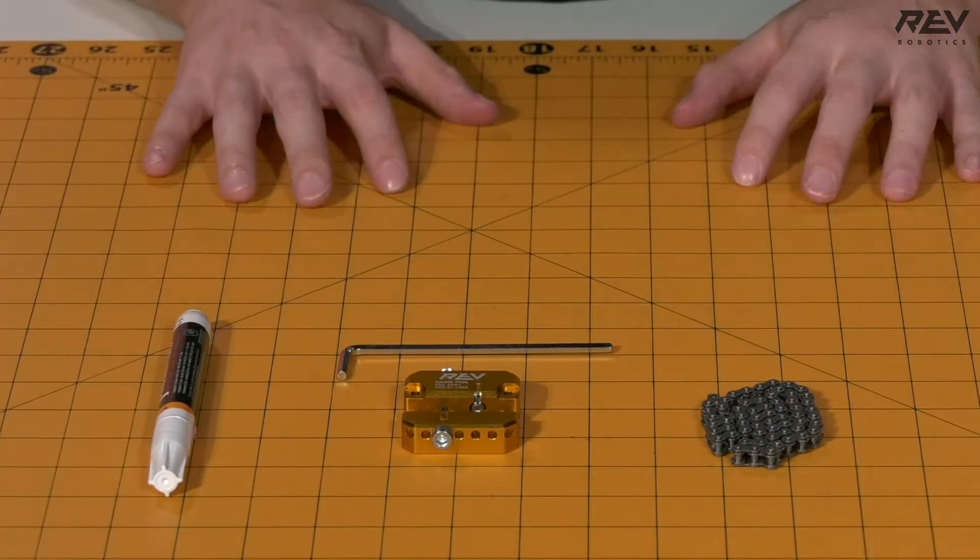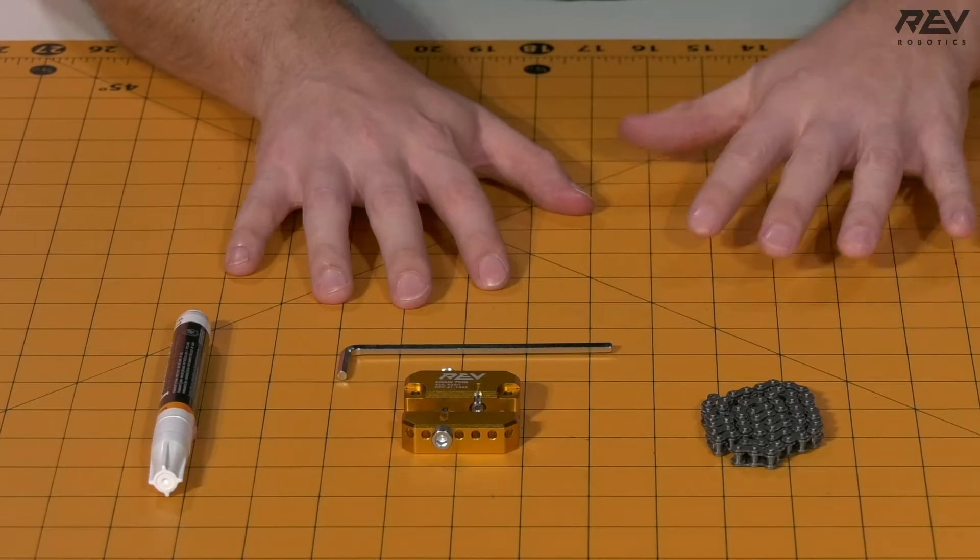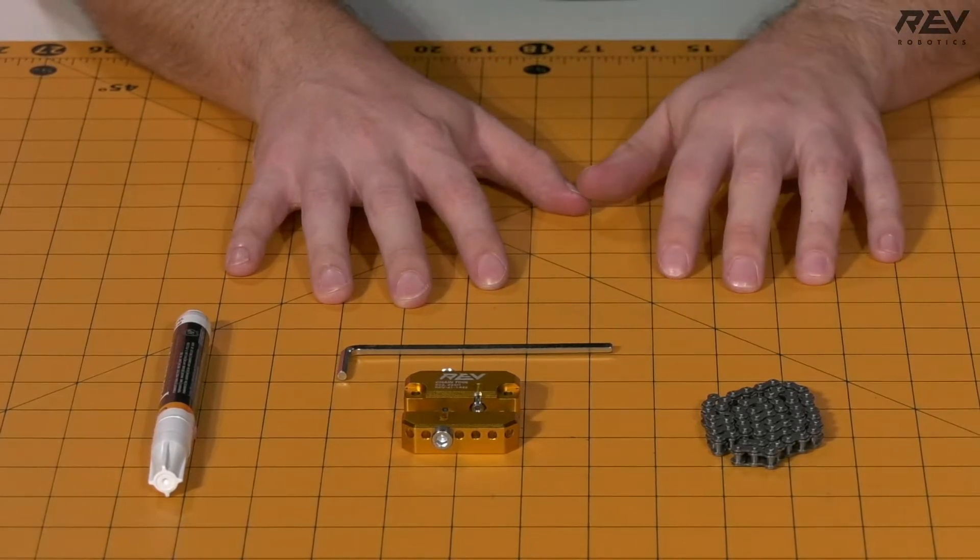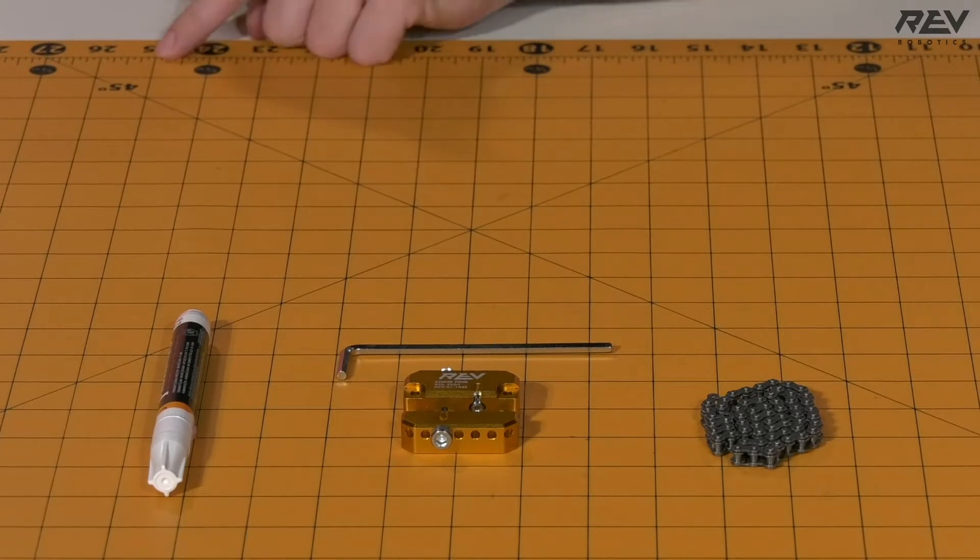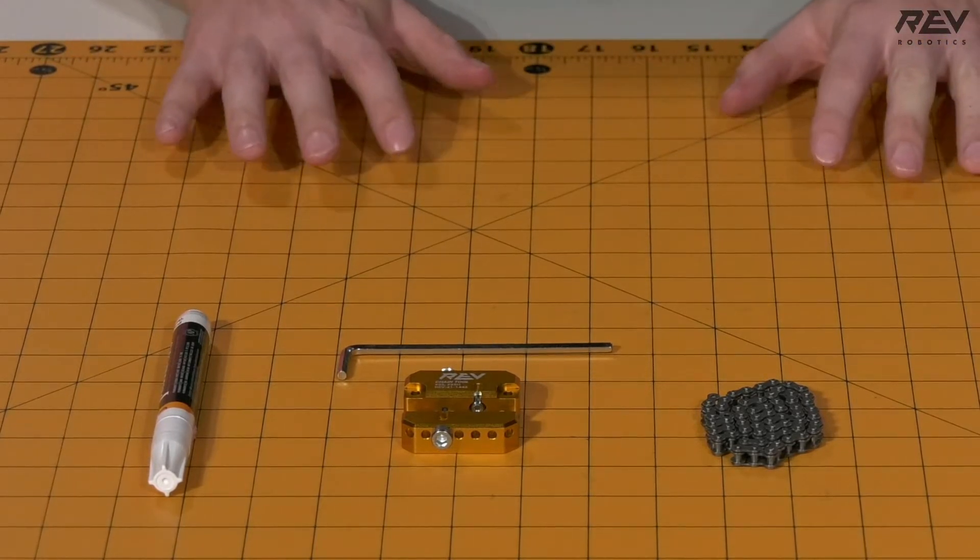And it's also helpful to have something as a measuring device. So this mat that we have here, each one of these squares is about an inch, and so we'll be able to measure our chain through using this mat.